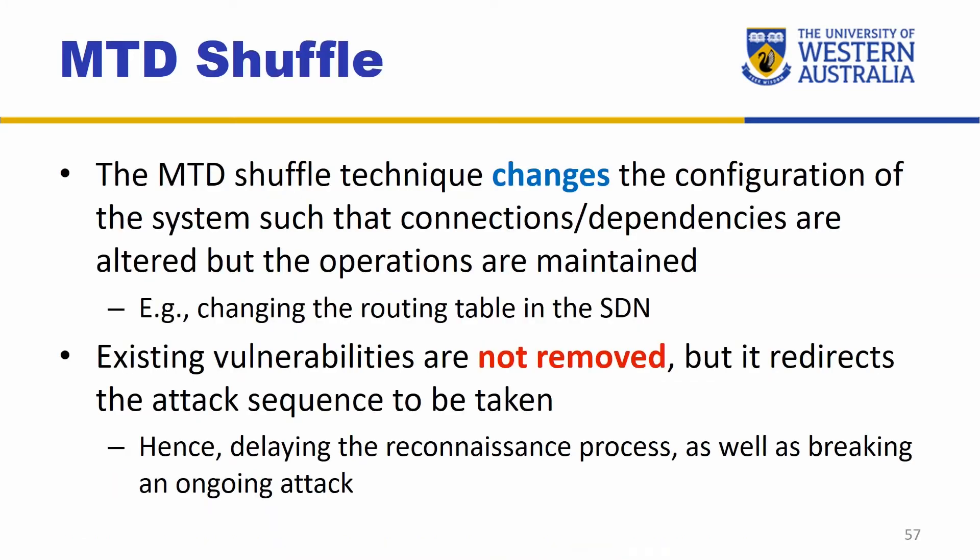The shuffle technique changes the configuration of the system such that the connections or dependencies can be altered, but at the same time the operations are maintained. What we want to achieve is that whatever we do to the system, it still does the same thing — but we make changes such that attack scenarios have to be altered. Existing vulnerabilities are not removed due to the shuffle because we are just reorganizing the structure using existing components. The vulnerabilities may have relationships between different hosts' applications, but the dependencies are changed within the system, which can delay the reconnaissance process as well as breaking an ongoing attack.